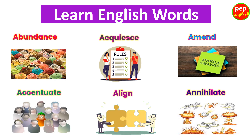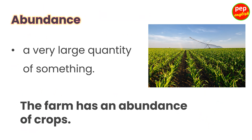Learn English words with examples. Abundance: a very large quantity of something. The farm has an abundance of crops.